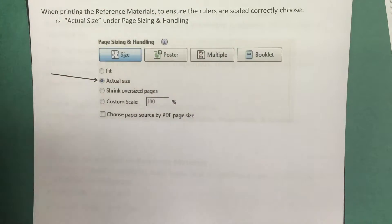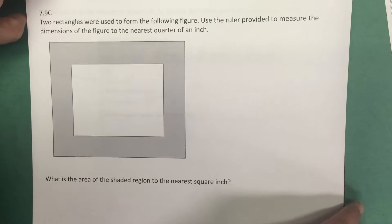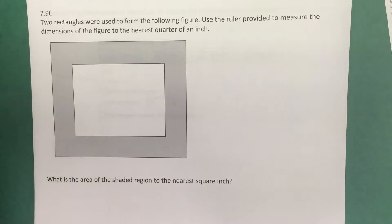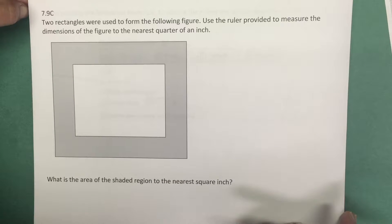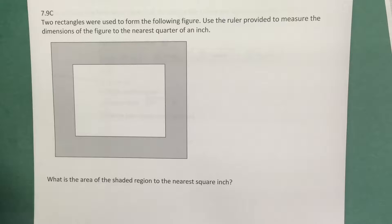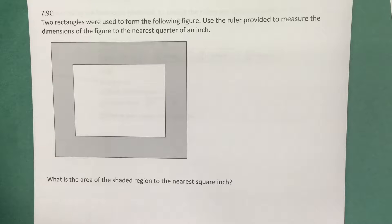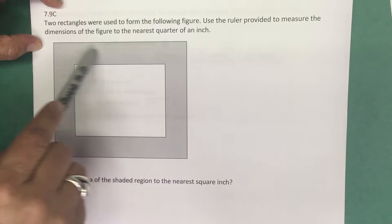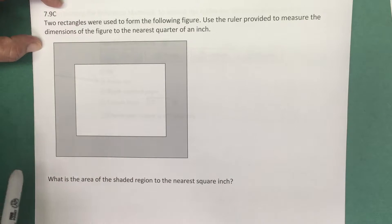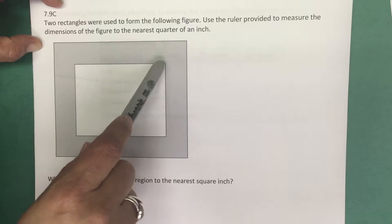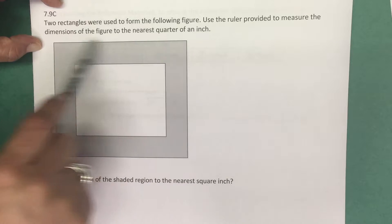Let's take a look at a problem from the STAAR. This is one of the released problems from the 2016 7th grade STAAR test. The problem says two rectangles were used to form the following figure. Use the ruler provided to measure the dimensions of the figure to the nearest quarter of an inch. What is the area of the shaded region to the nearest square inch? So we're being asked to find the area of the shaded region, which is a composition of a smaller rectangle inside a bigger rectangle.